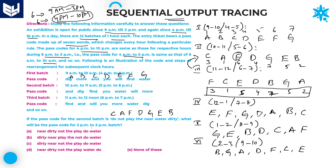What will be the passcode for 2 to 3 PM? That is batch number 6. Batch number 6 is B, G, A, D, F, C, E. So B is equal to 'dirty', G is equal to 'near', A is equal to 'not', and so on.